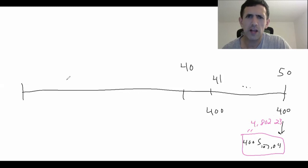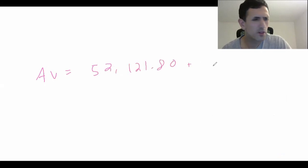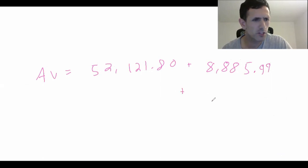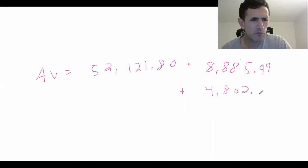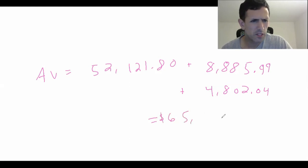Adding all three accumulated values together, the final accumulated value is $65,810.23. You should check these values in your calculator.